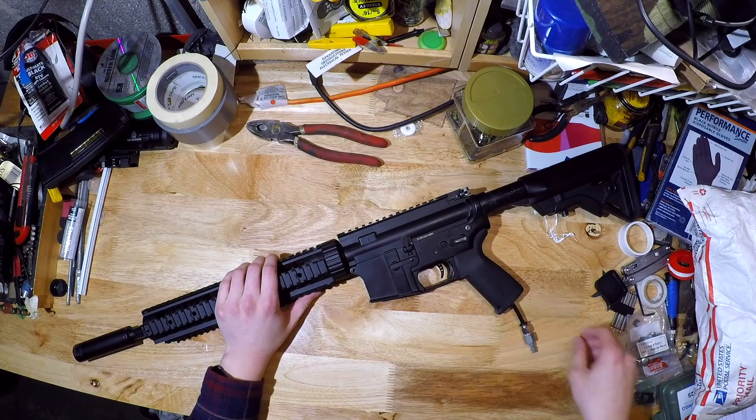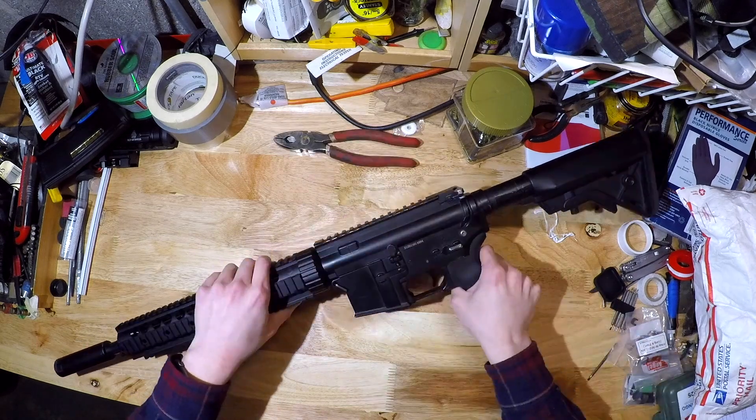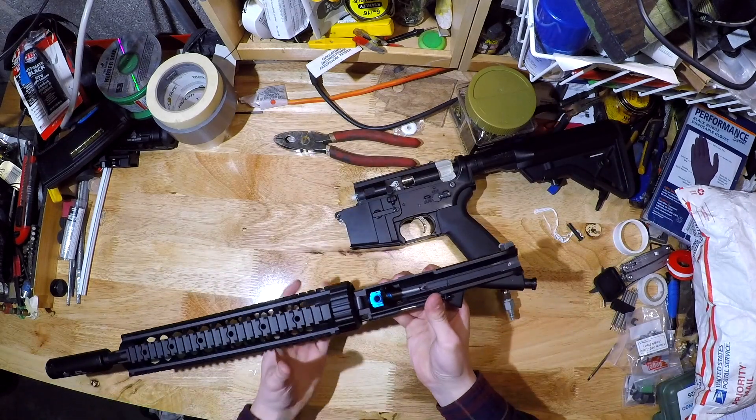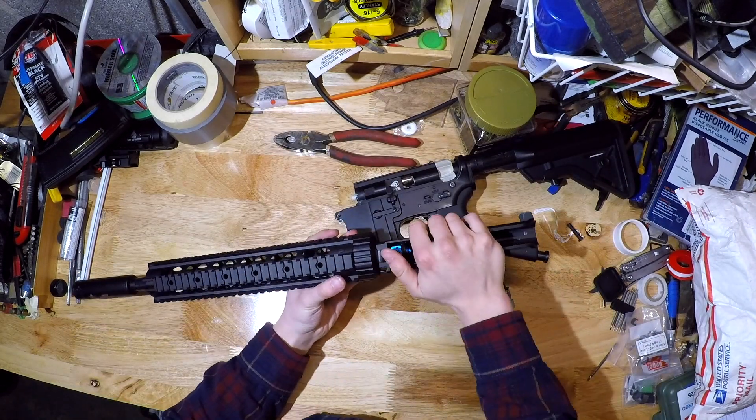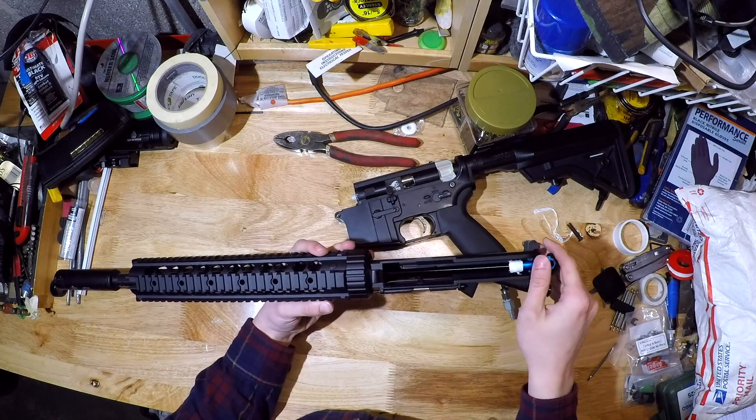So let's get right into it. The first thing you want to do is just to break down your rifle into its upper and lower components. So we've taken out our front pin and we've taken the upper away from the lower. We're going to take our hop up chamber and we're just going to pull it from the upper straight out. We should have our barrel attached.